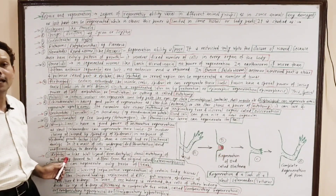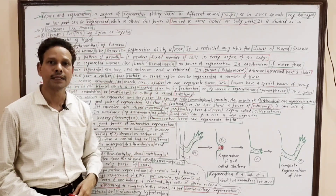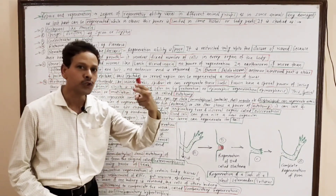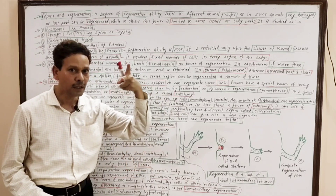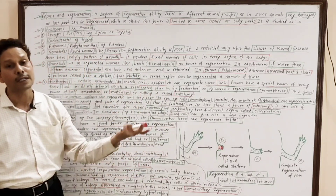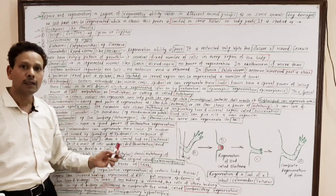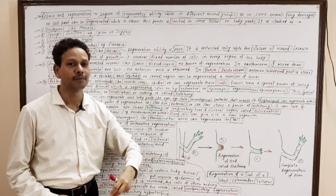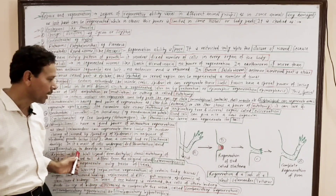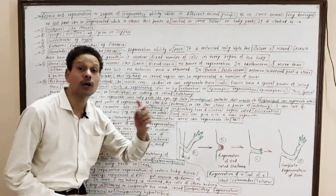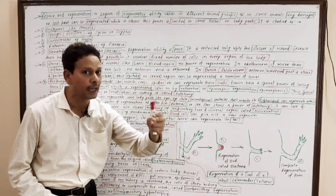In reptiles like the wall lizard (Hemidactylus), it also shows the power of autotomy — it cuts its tail for self-defense. However, the newly formed tail differs from the original tail. That kind of regeneration is a heteromorphic process, meaning a different type of tail develops.